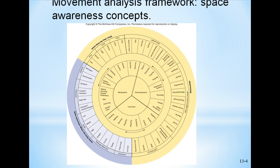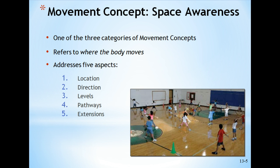The third ring defines the components. Location is in relation to self-space and general space. Directions relate to up, down, forward, backward, right, left, clockwise, and counterclockwise — which is a little harder for pre-K and kindergarten kids. Levels are low, medium, and high. Pathways are straight, curved, and zigzag. Extensions are large and small. Space awareness is usually the first movement concept taught in a physical education program, referring to where the body moves, addressing five aspects: location, direction, levels, pathways, and extensions.